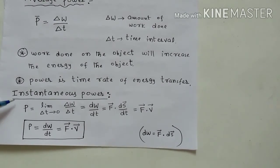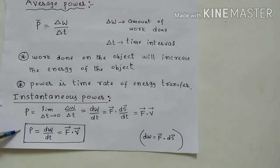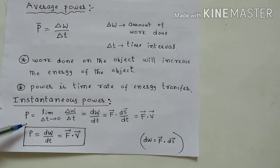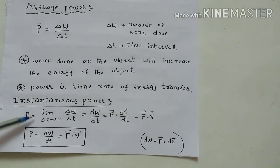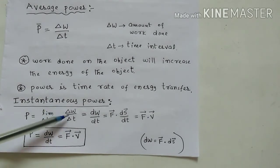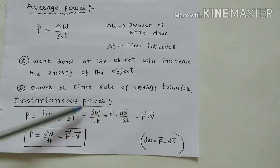Now we will discuss instantaneous power. Instantaneous power means in average power, del W by del T. Now as time interval tending to zero, it will become instantaneous power. P equal to limit del T tending to zero, del W divided by del T equal to, it will become dW by dt. This dW is nothing but F dot dS, force into displacement.